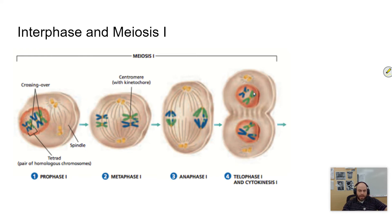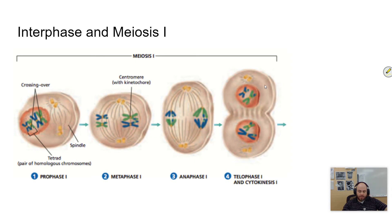Think about it like pairs of shoes — you have 23 pairs of shoes, so 46 shoes when duplicated. Then over here you have all lefts and over there all rights. These cells are technically haploid even though they have two of every chromosome they contain, because there's only one of each pair. So anaphase I: homologous pairs separate, and you have two cells that are both haploid but doubled.